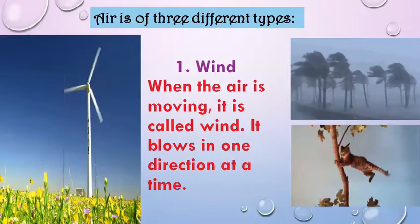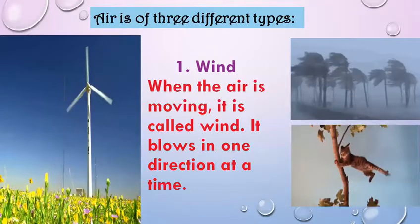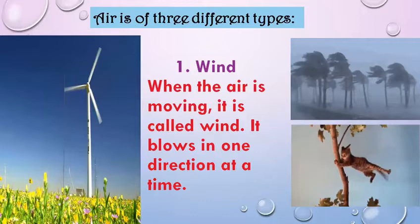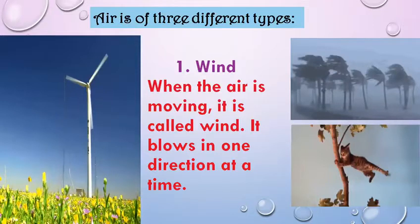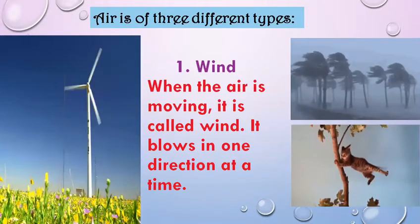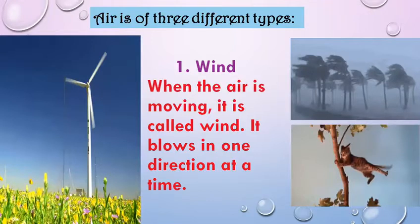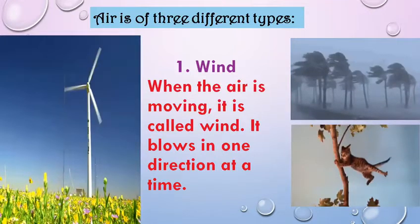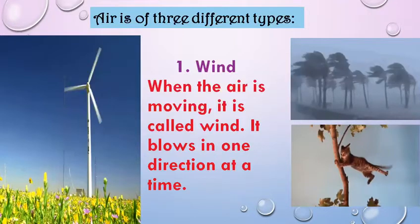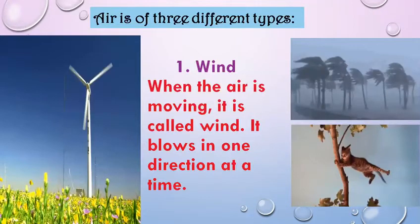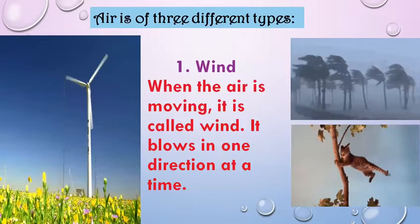Air is of three different types. Wind: when the air is moving, it is called wind. It blows in one direction at a time. Activities like parachute gliding, kite flying, and working of windmills are possible with the help of wind. It also helps in carrying pollens and seeds from one place to another, so new plants are grown in faraway places too. We can use the energy of wind to produce electricity with the help of windmills.